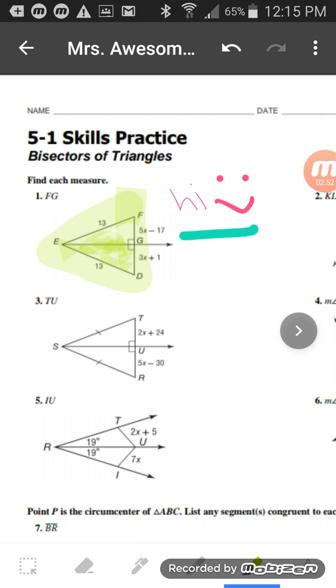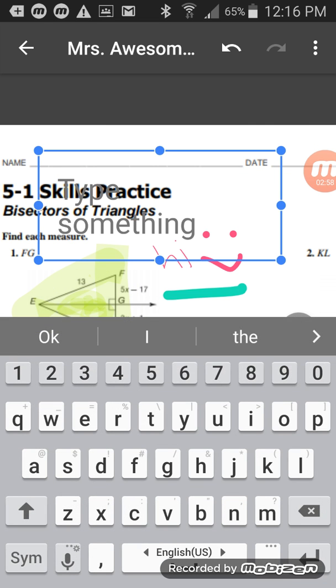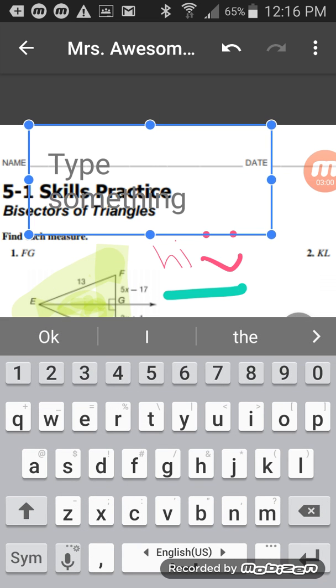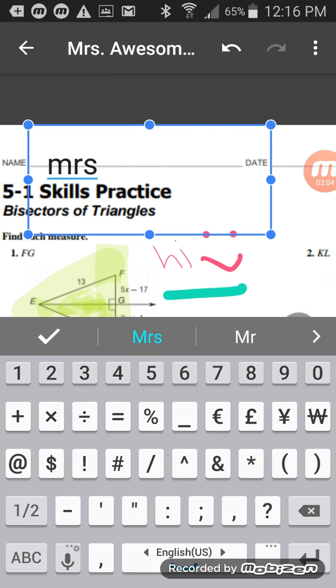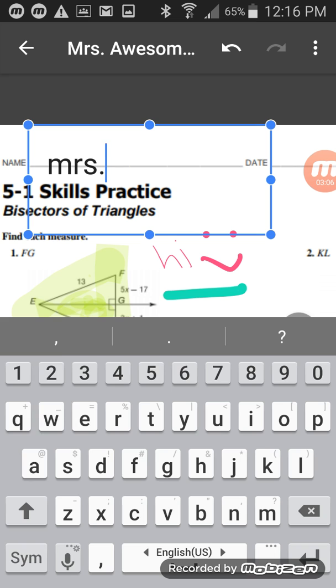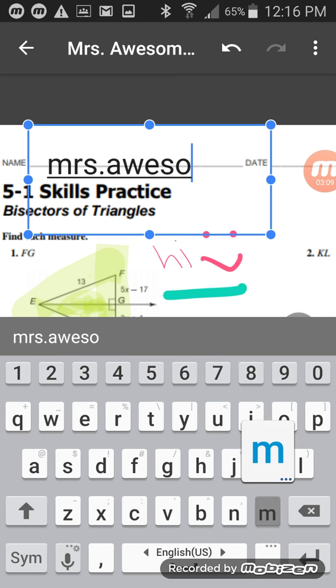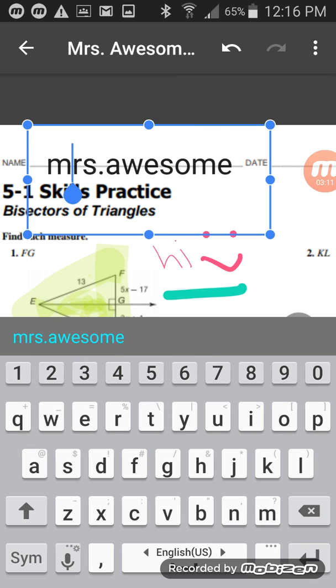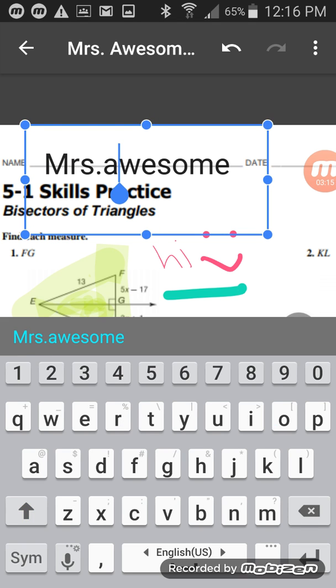Now, if I want to add a text, I'm going to click on that text button and I'm going to go to where it says your name, and I'm going to type in Miss Awesome. Make sure you capitalize the M and make sure you capitalize the A.